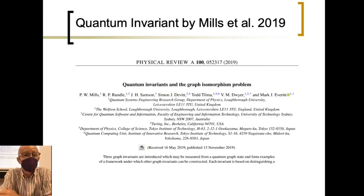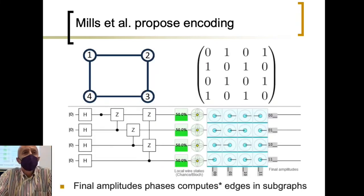In the paper you can see on the screen, by Mills and one, two, three, I don't know, six or seven more people, they present some quantum invariants in Physical Review A year 2019. And on those physical invariants, they start from this codification, this encoding of the adjacency matrix of the graph. The encoding is quite straightforward, as you can see on the screen.